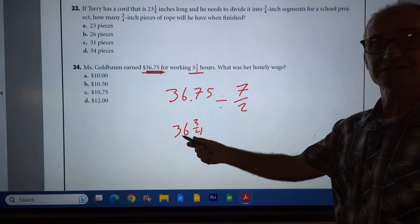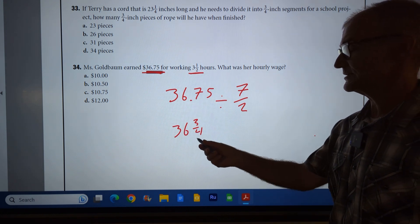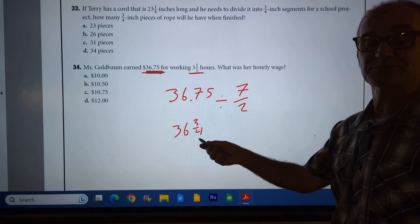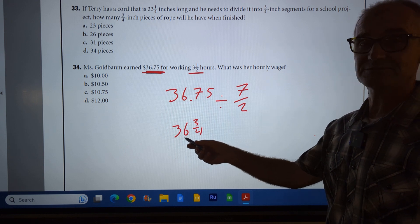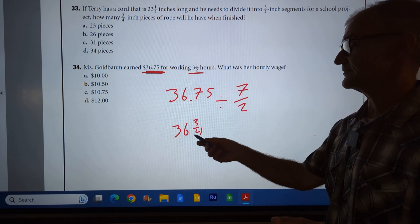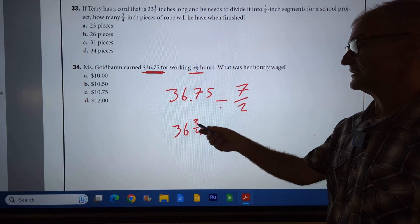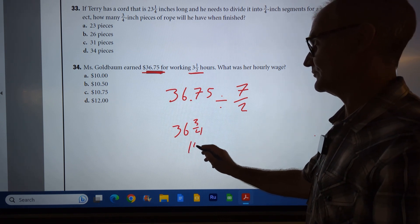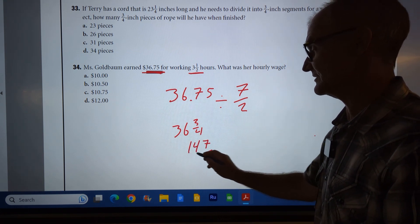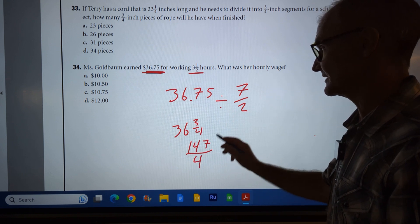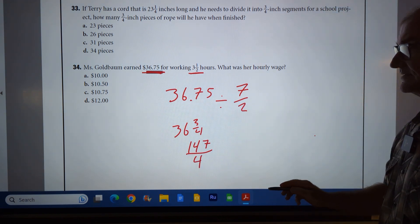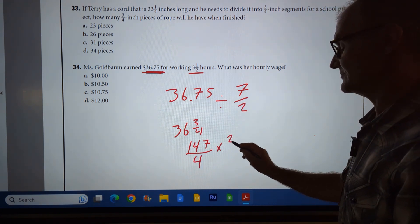I think I'm going to do the same thing here. I'm going to turn this into an improper fraction. 36 times two, 72. 72 times two is 144, plus three. So that's 144 plus three, 147-fourths, divided by seven-halves, or times two over seven.